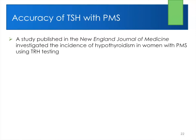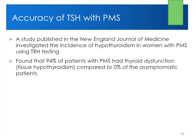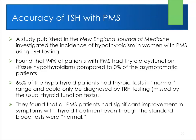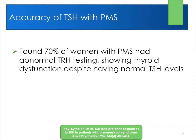Regarding PMS: a New England Journal of Medicine study investigated the incidence of hypothyroidism in women with PMS using TRH testing. They found that 94% of patients with PMS had thyroid dysfunction compared to 0% of asymptomatic normals, and 65% had tests in the normal range and would not have been diagnosed. All had significant improvement in PMS with thyroid treatment. Giving these patients low-dose thyroid along with low progesterone will help the majority of them. Another study in the American Journal of Psychiatry found 70% of women with PMS showed abnormal TRH testing indicating low thyroid — again undetectable by TSH alone.